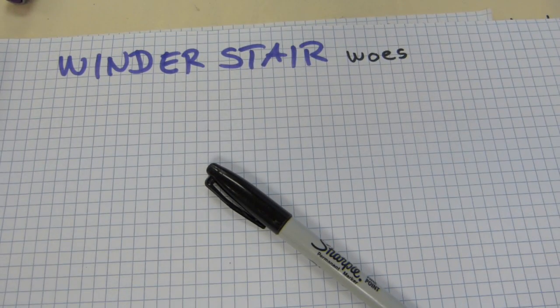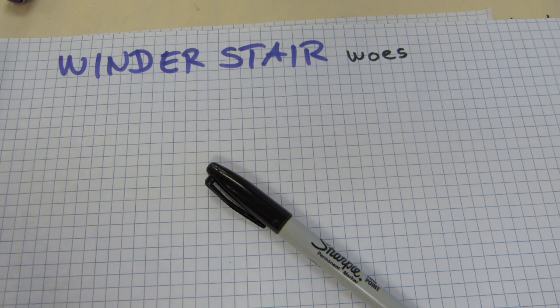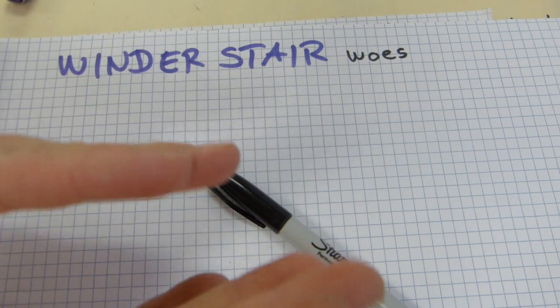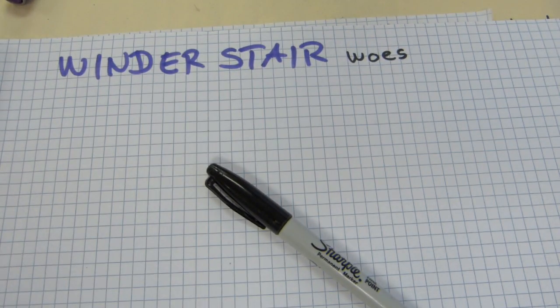A brilliant question came up. What can you do with your miserable winder stairs that were built wrong, so that at the landing where you have the tapered steps, they taper to such a narrow point that you can barely put your toes on it?